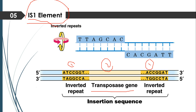The insertion sequence is 700 base pairs long. It contains two regions: the first is the inverted repeat region, and the second is the transposase gene, which codes for the transposase enzyme. This enzyme is responsible for transposition and for recognition of the inverted repeat sequence at the target DNA where the insertion sequences will be inserted.